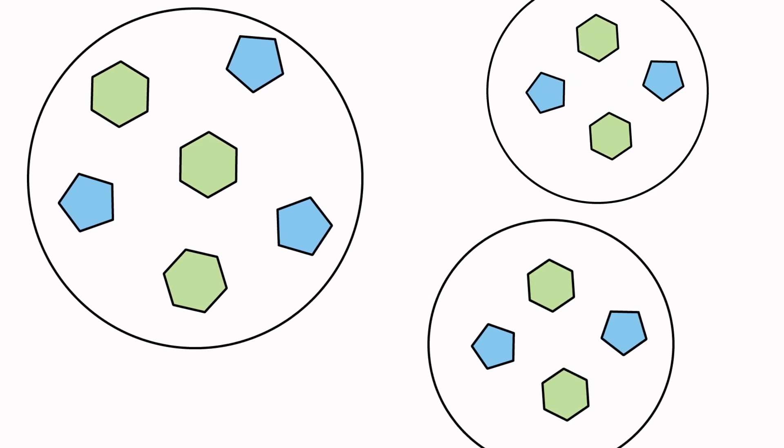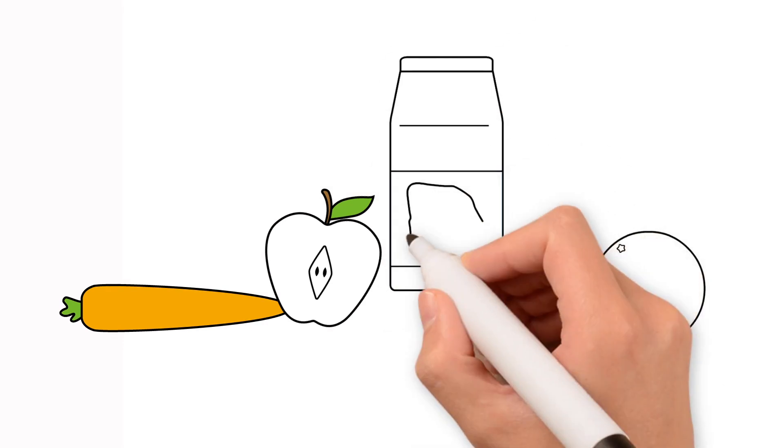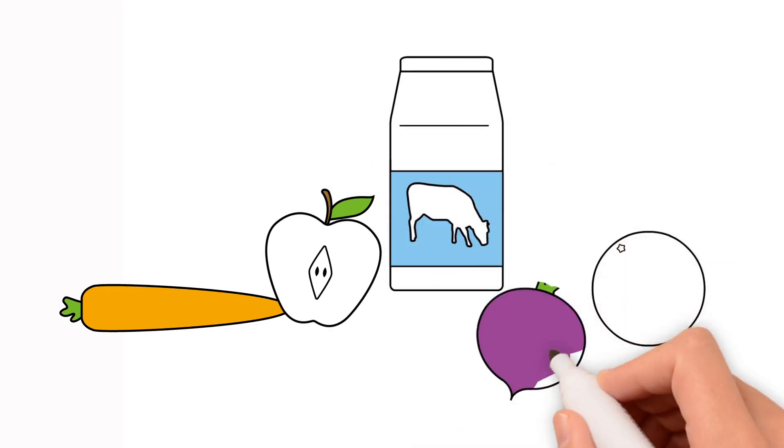The sugars found in fruit, vegetables, and milk don't seem to have a negative effect on our health, and they come with extra nutrients such as fiber.